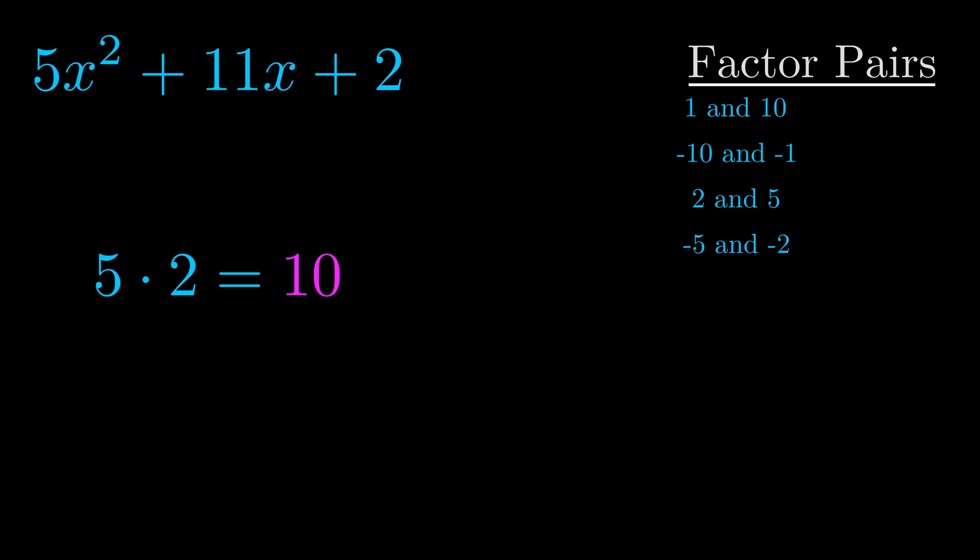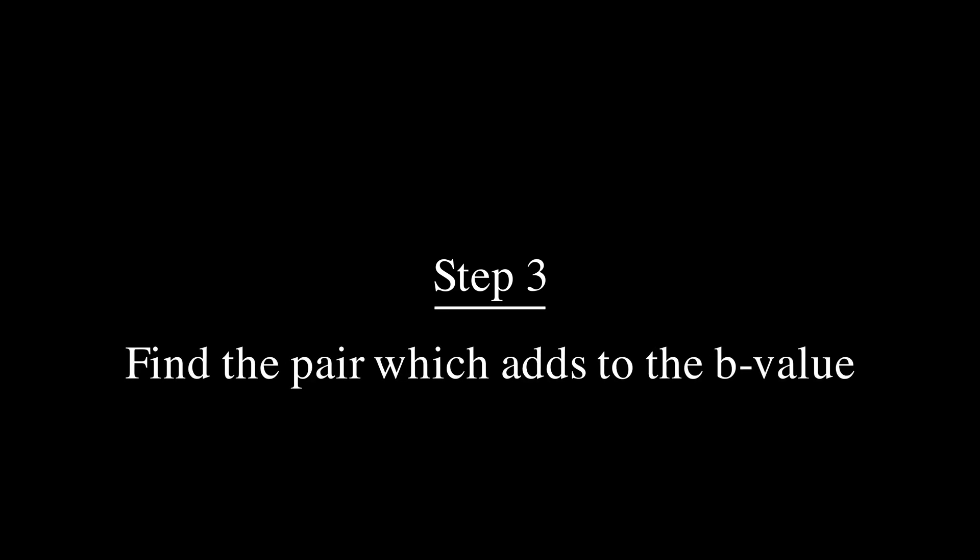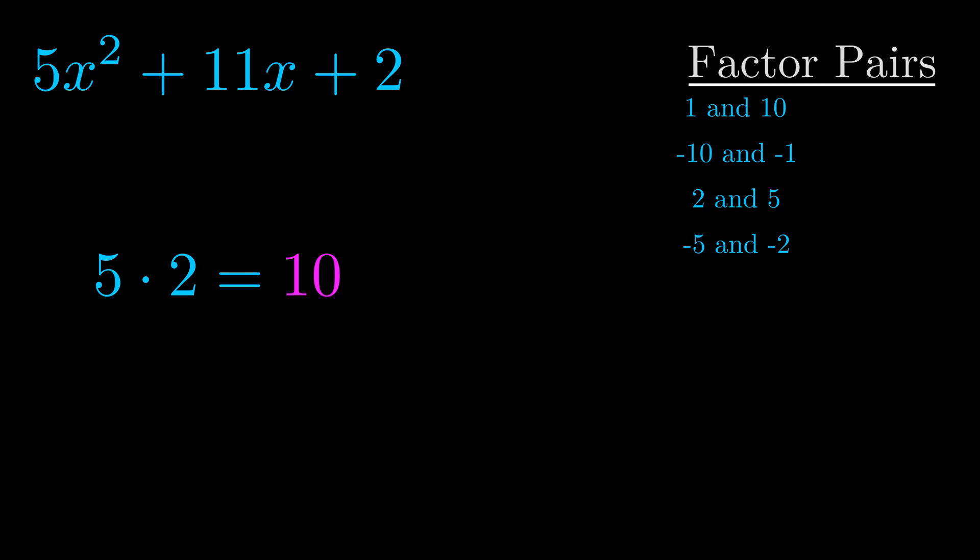Now once you have these factor pairs, the goal is to find which of these pairs adds to the b value. The b value is the coefficient on the x term. That's the middle term, the one that we haven't done anything with yet.